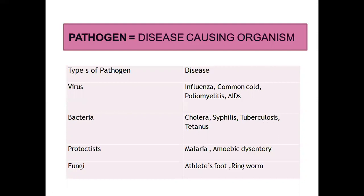Tetanus, also called lockjaw, is caused by a bacteria called Clostridium tetani. In this, stiffness of muscles occurs. Protoctists, also called protozoa — diseases caused by protozoa include malaria and amoebic dysentery. Malaria is caused by a protozoan called Plasmodium, and its symptoms include high temperature, headache, and nausea. Amoebic dysentery is caused by Entamoeba, and the most important symptoms are diarrhea and abdominal pain.